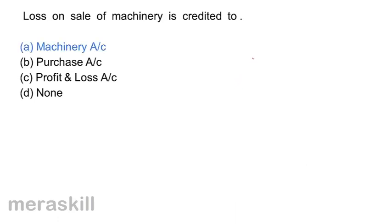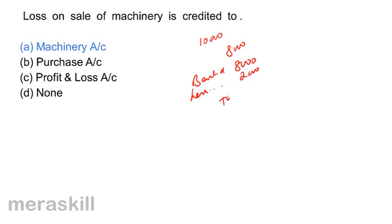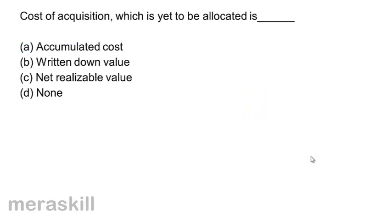For example, if we have machinery worth rupees 10,000 and it is sold for 8,000: Bank account is debited for 8,000, and loss on machinery account is debited for 2,000. Machinery account is credited with both the amount received and the loss. So loss on sale of machinery is credited to the machinery account.